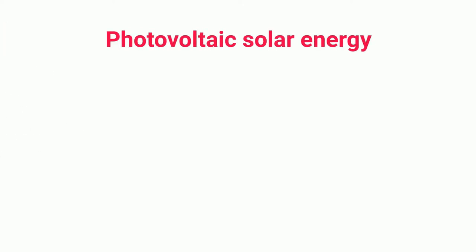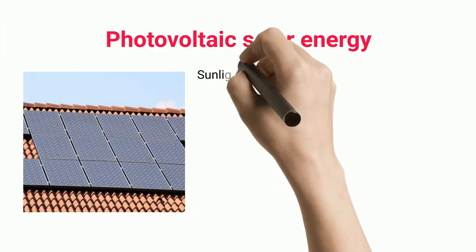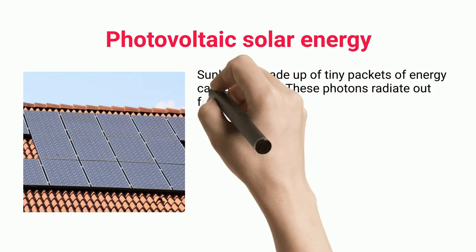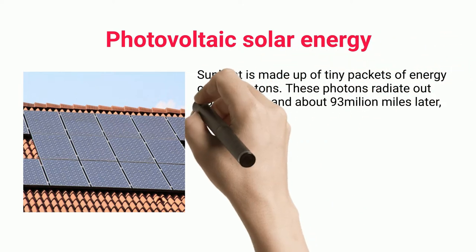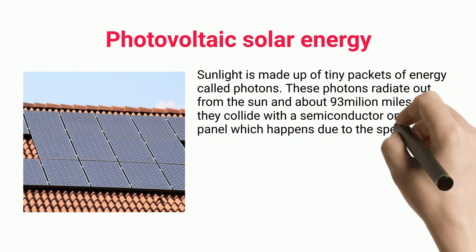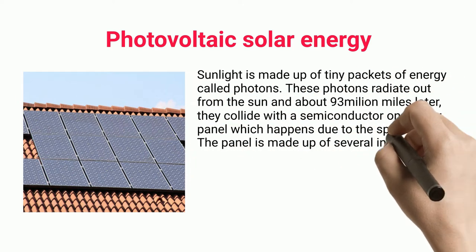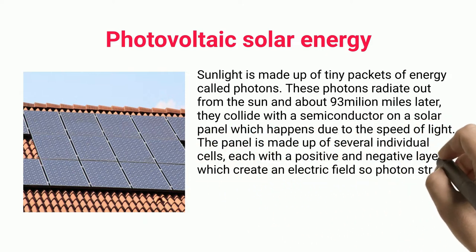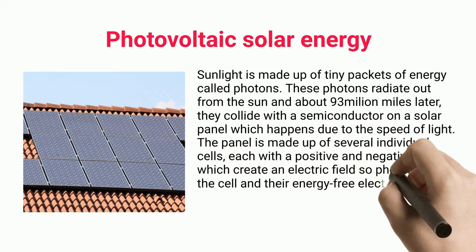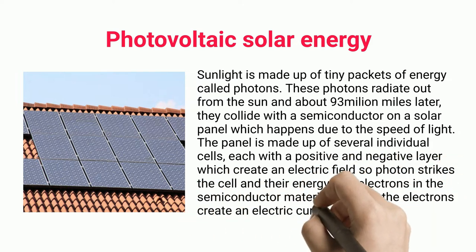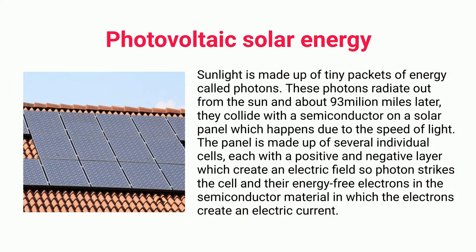Photovoltaic solar energy: sunlight is made up of tiny packets of energy called photons. These photons radiate out from the sun and about 93 million miles later, they collide with a semiconductor on a solar panel at the speed of light. The panel is made up of several individual cells, each with a positive and negative layer which creates an electric field. When photons strike the cell, they free electrons in the semiconductor material, and those electrons create an electric current.